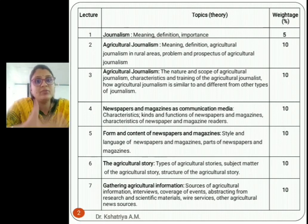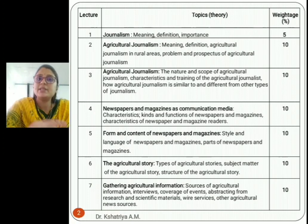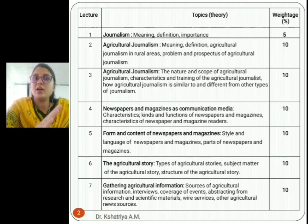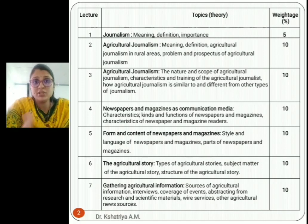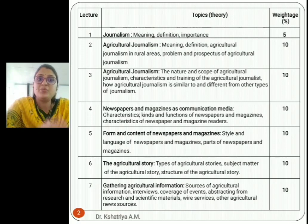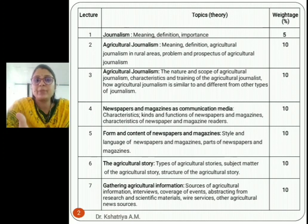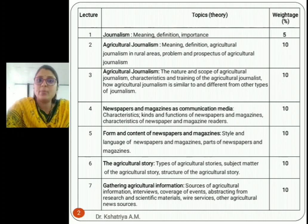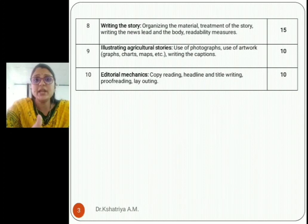After learning about journalism, newspapers, magazines, and the agricultural story, the seventh topic covers how you collect information for magazines and newspapers. This is Gathering Agricultural Information — what are the sources, how to collect information for news and magazines, including interviews, coverage of live events, abstracting from research and scientific materials, wire services, and other agriculture news sources. It is about ten marks.